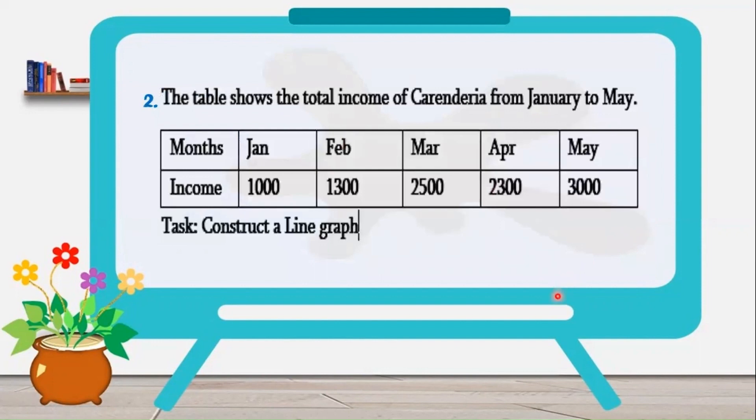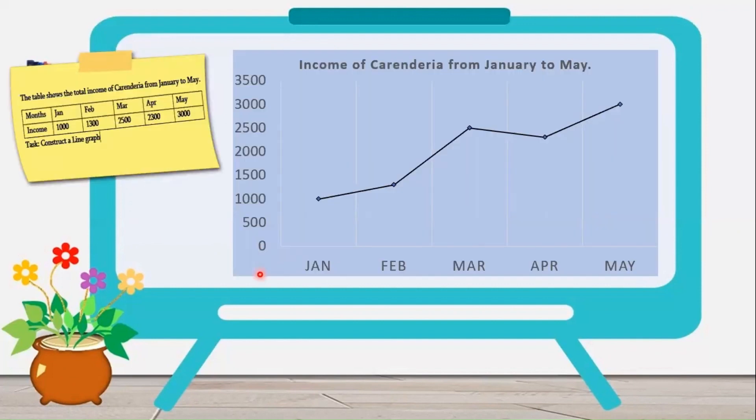Number 2. The table shows the total income of Carindiria from January to May. Our task here is to construct a line graph, so we need to see the trend of the income of the Carindiria for 5 months. Here is now our line graph showing the income of Carindiria from January to May. In January, our income is $1,000 and it rises up to February. Our income in February, so we have here the table, it's $1,300.